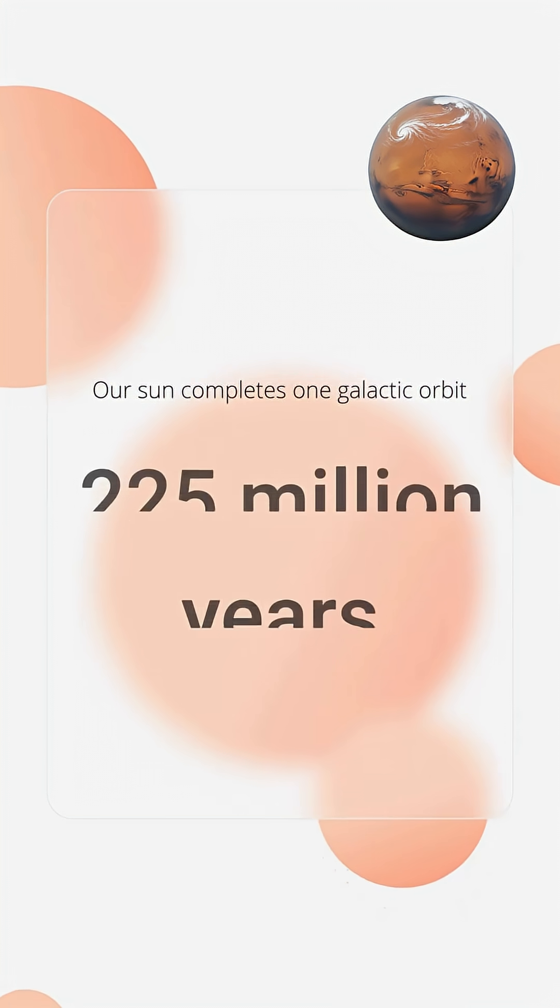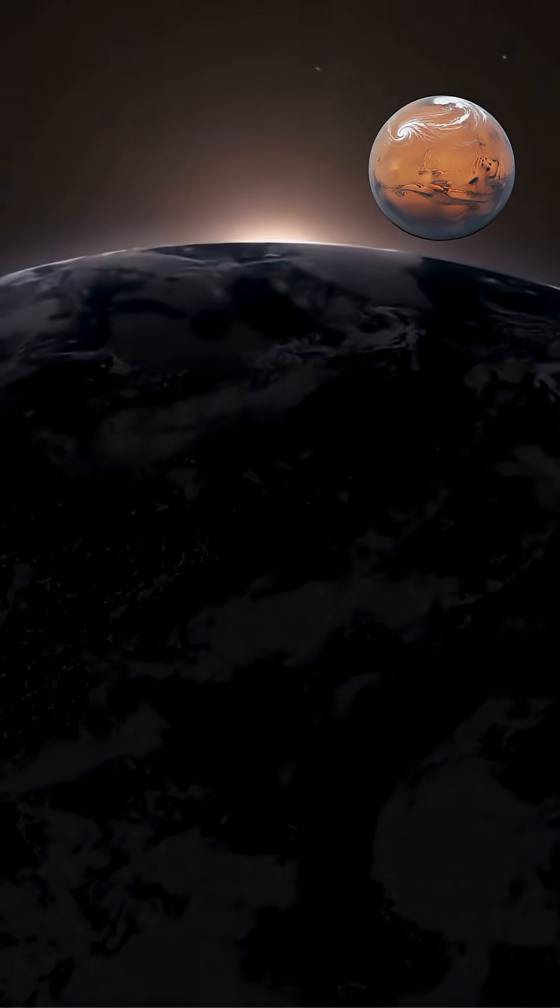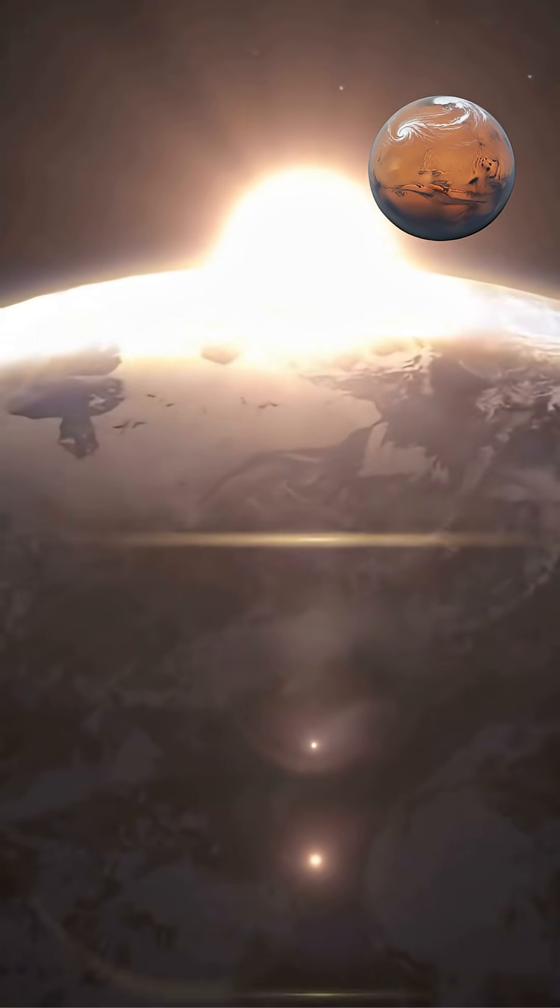Our Sun completes one galactic orbit approximately every 225 million years, traveling at roughly 490,000 miles per hour through space.